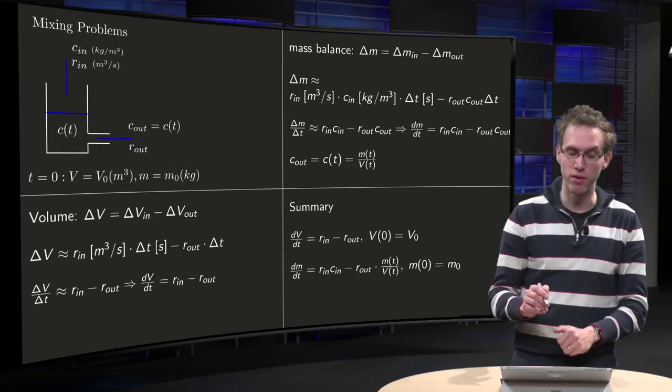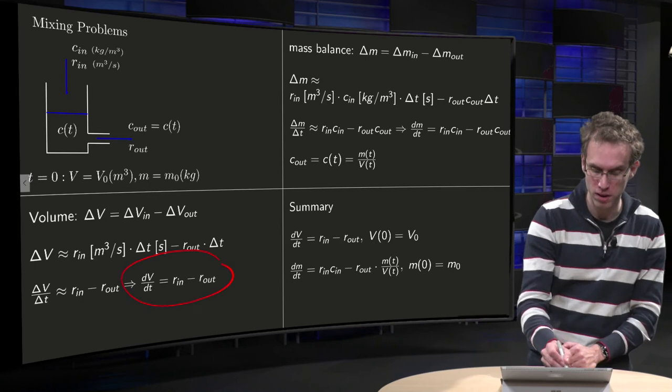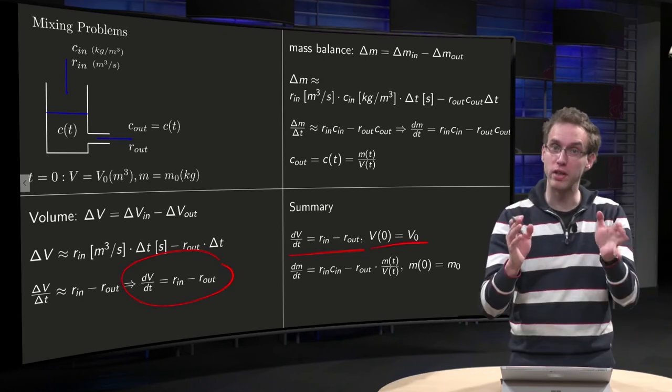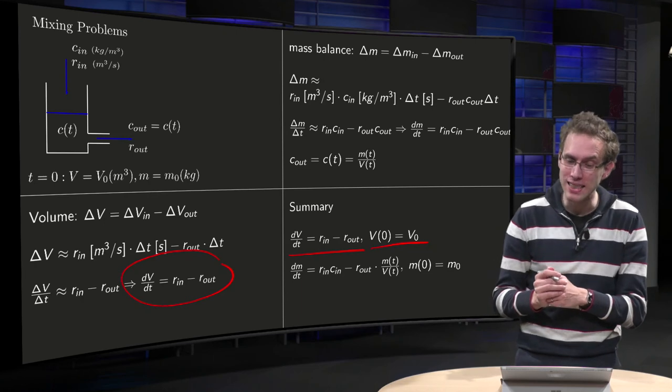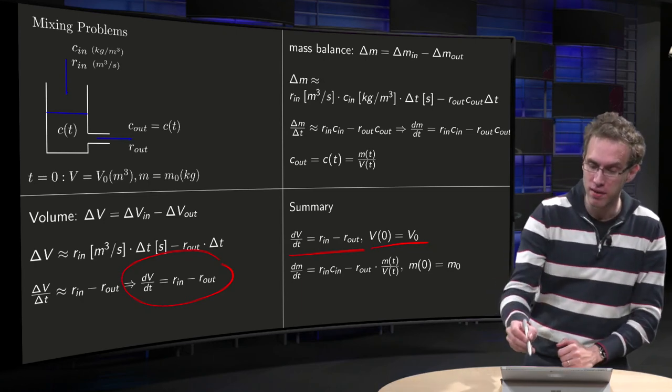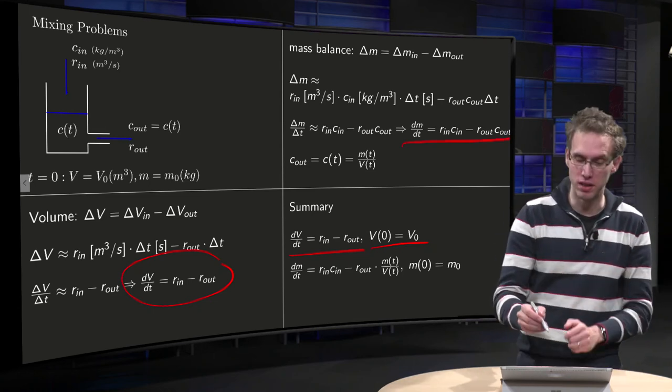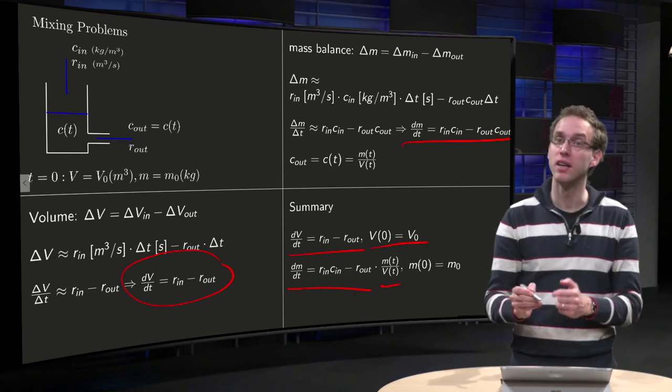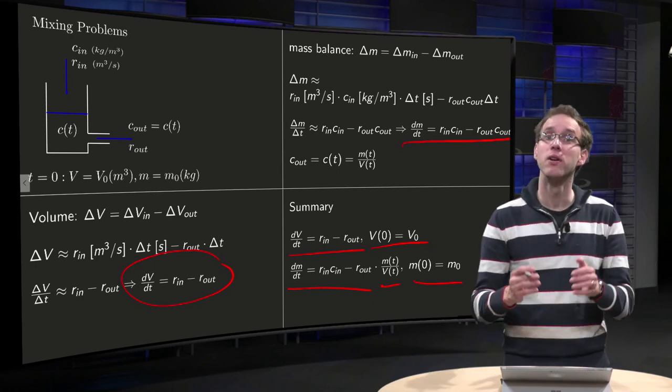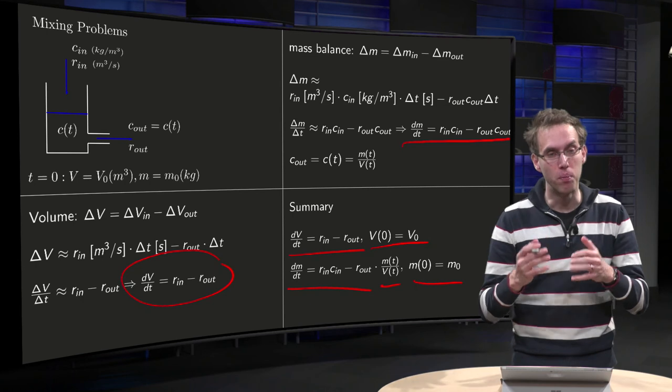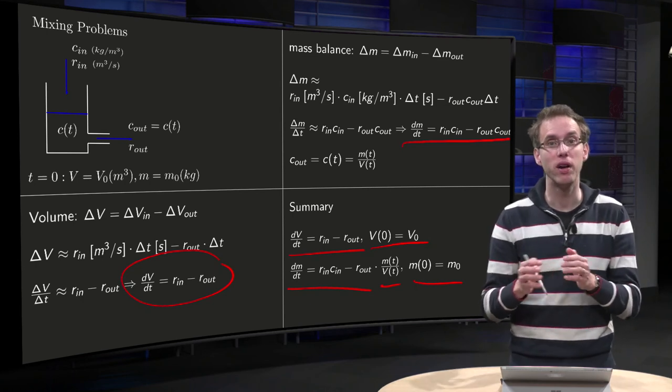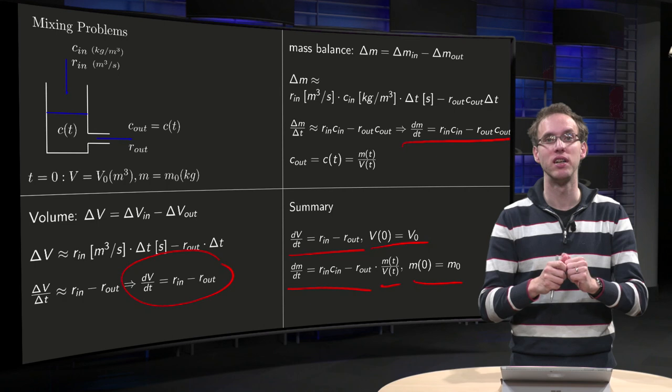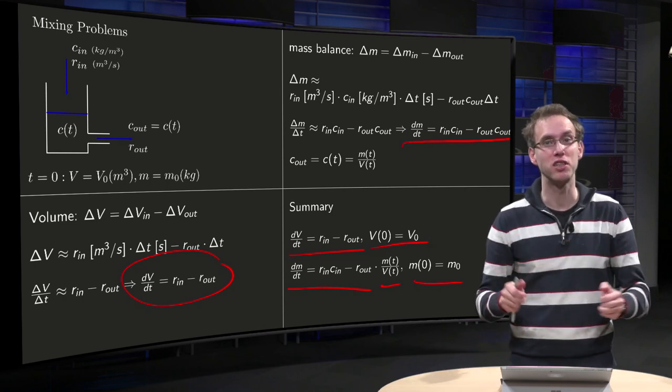So let's summarize. We have a balance equation for the volume. dV/dT equals R_in minus R_out, and some initial volume, so that is one differential equation for the volume. And secondly, we have a mass balance equation, which gives us an equation for the dm/dt. dm/dt equals R_in c_in minus R_out c_out, and c_out equals M over V, and some initial mass. So in order to model our mixing problem, we have to solve two differential equations, one for the volume and one for the mass balance. We'll do that in some explicit examples in some future videos.